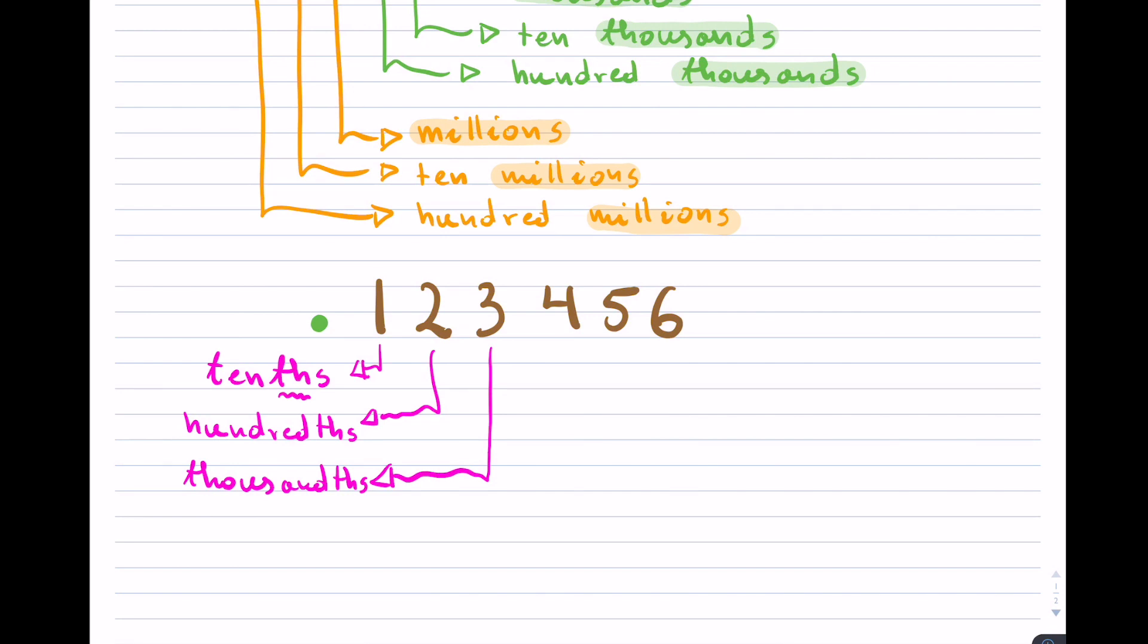And then the next place value will be known as the thousandths. And then it continues on. So this one right here, that would be known as the ten-thousandths. And you are probably noticing a pattern here.